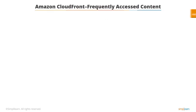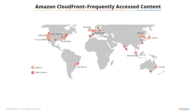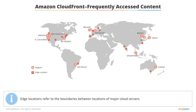Amazon CloudFront administers an association of edge locations to store copies of frequently accessed files in proximity to its users. Edge locations refer to the boundaries between locations of major cloud servers.